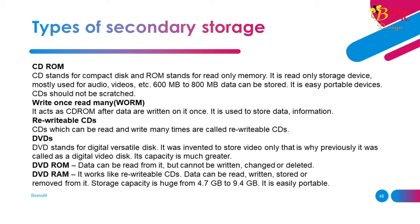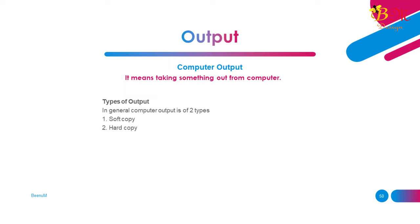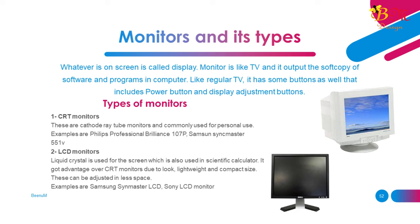Part 9: Output. Computer output means taking something out from the computer. Types of output: soft copy and hard copy. Forms of output devices: printers print text or images on paper; monitors display output; speakers output sound; multimedia projectors output multimedia.